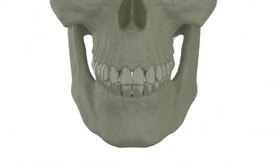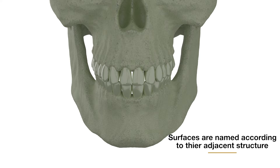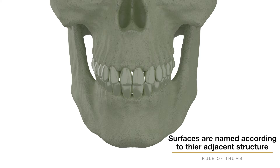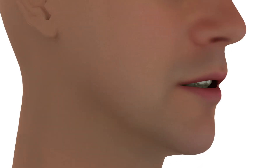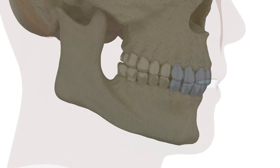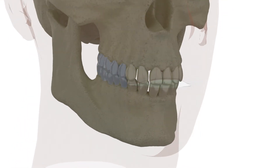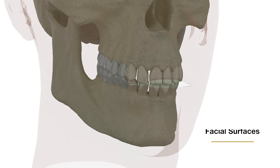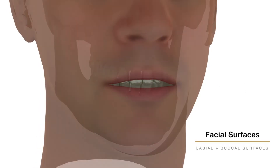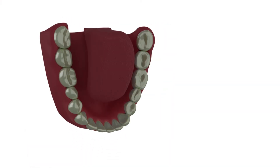Let us start by discussing the surfaces of the tooth. The rule of thumb is that surfaces are named according to their adjacent structures. Each tooth contains 5 surfaces in total. Incisor and canine surfaces towards the lip — or labial in Latin — are called labial surfaces. Similarly, premolar and molar surfaces towards the cheek — or buccal in Latin — are called buccal surfaces. Labial and buccal surfaces are together known as facial surfaces. All surfaces towards the tongue — or lingual in Latin — are called lingual surfaces.